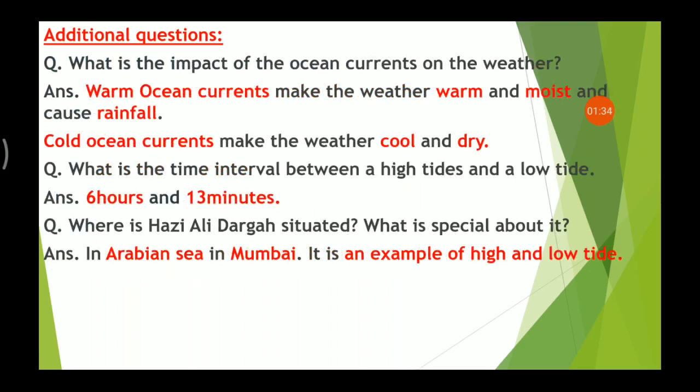What is the impact of the ocean currents on the weather? Warm ocean currents make the weather warm and moist and they also cause rainfall. Cold ocean currents make the weather cool and dry.